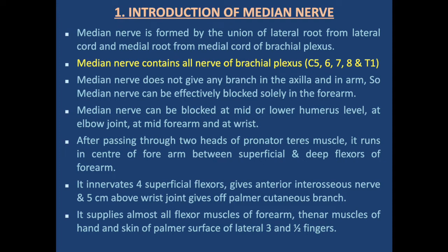The median nerve can be blocked at mid or lower humerus level, at the elbow joint, at mid forearm, and at the wrist. After passing through two heads of the pronator teres muscle, it runs in the center of the forearm between the superficial and deep flexors. It innervates four superficial flexors, gives off the anterior interosseous nerve, and five centimeters above the wrist gives off the palmar cutaneous branch.